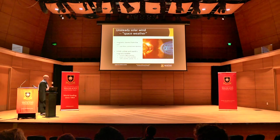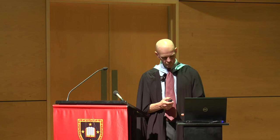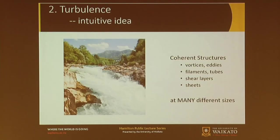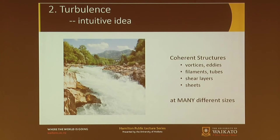So that was part one — a brief introduction to the solar wind. The next part is an introduction to turbulence. We all have an intuitive idea of turbulence — something like a river with bubbling, energetic, active behaviour. Nothing's very smooth. You can see circulating water, which we call a vortex. If you look closely enough, you'd see some circulating water at smaller and bigger scales — there's a whole range of different sizes of these objects.